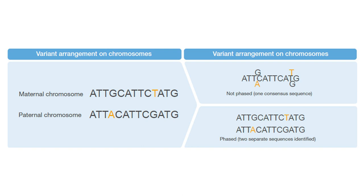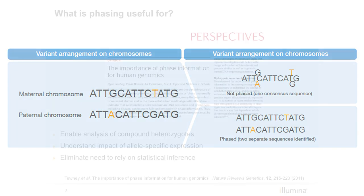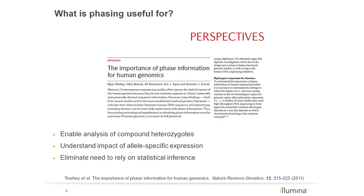By phasing the gene and separating the consensus strand into two separate identifiable sequences, we can see that the mutations are contained on separate strands. There are many examples where phasing provides valuable information and why molecular phasing, or phasing directly from sequence data, is important.